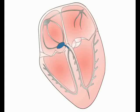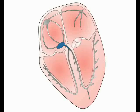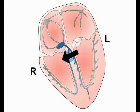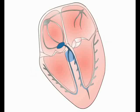The right and left bundle branches transmit the depolarizing signal into the muscle mass of the right and left ventricles respectively. The interventricular septum is the first part of the ventricular muscle mass to depolarize, and it does so by movement of current across the septum from the left towards the right bundle branch. This early left-to-right movement of current in the septum is crucial to understanding several important ECG abnormalities.